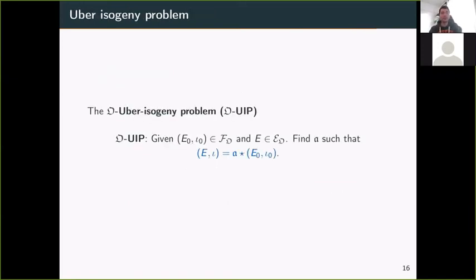Now that I've introduced this notation, I can state the Uber Isogeny Problem, parameterized by some quadratic order O. The idea is that given E₀ and ι₀ (a correct embedding) and a curve in the set E_O but given without the embedding (this is important), the goal is to find an ideal A sending (E₀, ι₀) to (E, ι), where ι is a correct embedding from O to the endomorphism ring of E. The best generic algorithm to solve this problem is linear in the size of E_O. In general, we don't know much about this set, but it's conjectured to have exponential size in most cases.